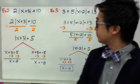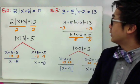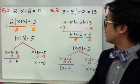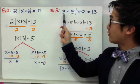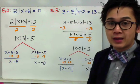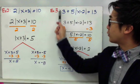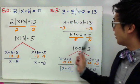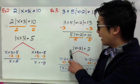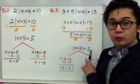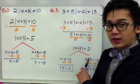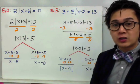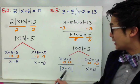For the third example, we have 3 plus 5 times the absolute value of x minus 2 is equal to 13. Just like example 2, we cannot split yet because we still have 3 and 5 by the absolute value. We first subtract 3 from both sides, then divide both sides by 5. Now the absolute value equals a number by itself, so we split into 2: x minus 2 equals 2 and x minus 2 equals negative 2, giving x equals 4 and x equals 0.